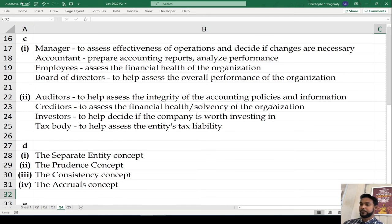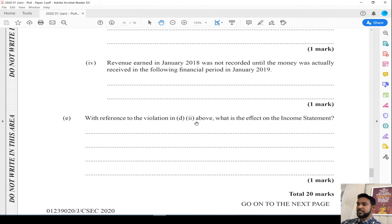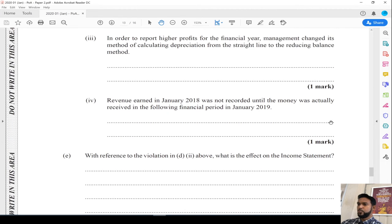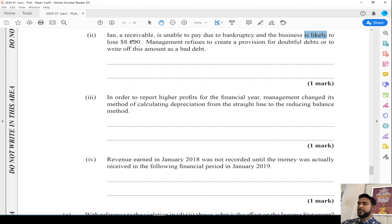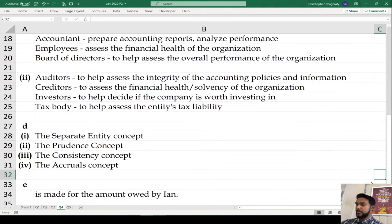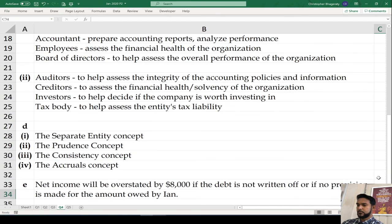Part E: With reference to the violation in D part 2, what is the effect on the income statement? That's where the company didn't create the provision or increase it by $8,000 or write it off. When you create or increase the provision, you debit the income statement, which basically puts an expense in it, and expenses reduce profit. If we're not doing that, we're not including an expense that should have been included, which means expenses are too low and profit is too high. Net income will be overstated by $8,000 if the debt is not written off or if no provision is made.